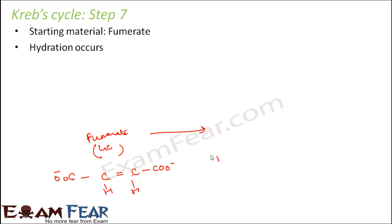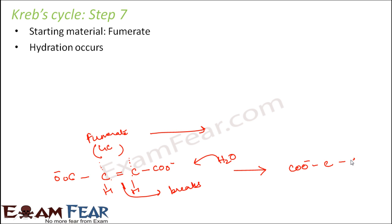Fumarate has a double bond between two carbon atoms. As soon as you add water to this, the double bond breaks. The H2O adds across the double bond as H and OH, forming new bonds. The double bond is now broken and water is incorporated as hydrogen and hydroxyl groups.